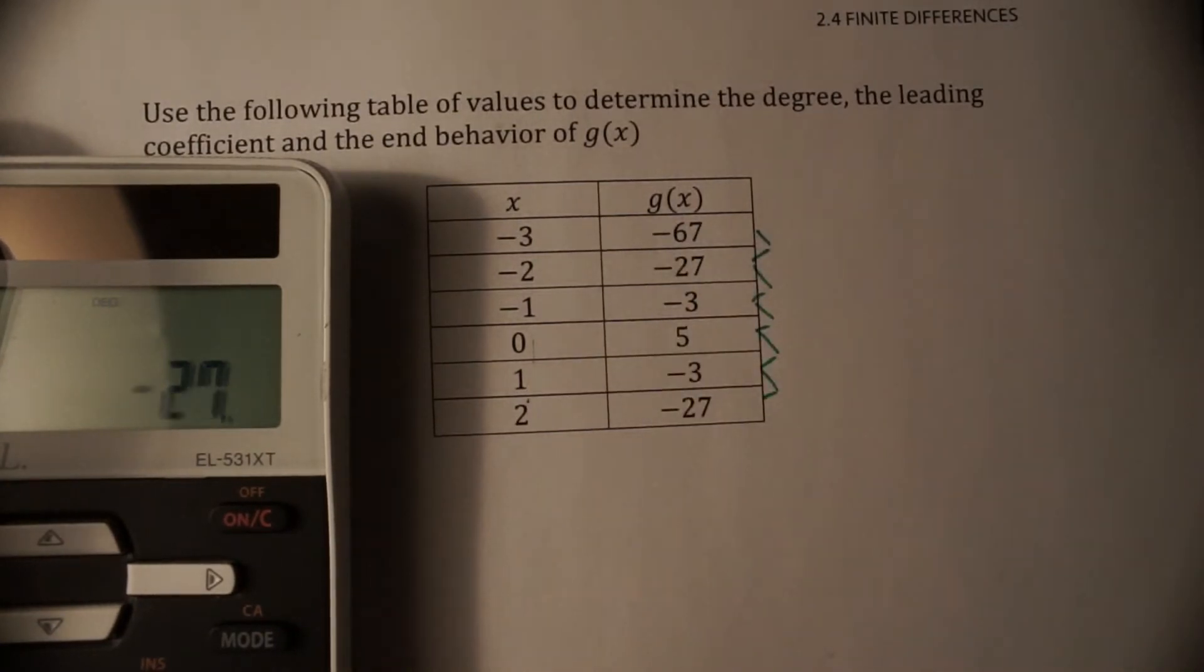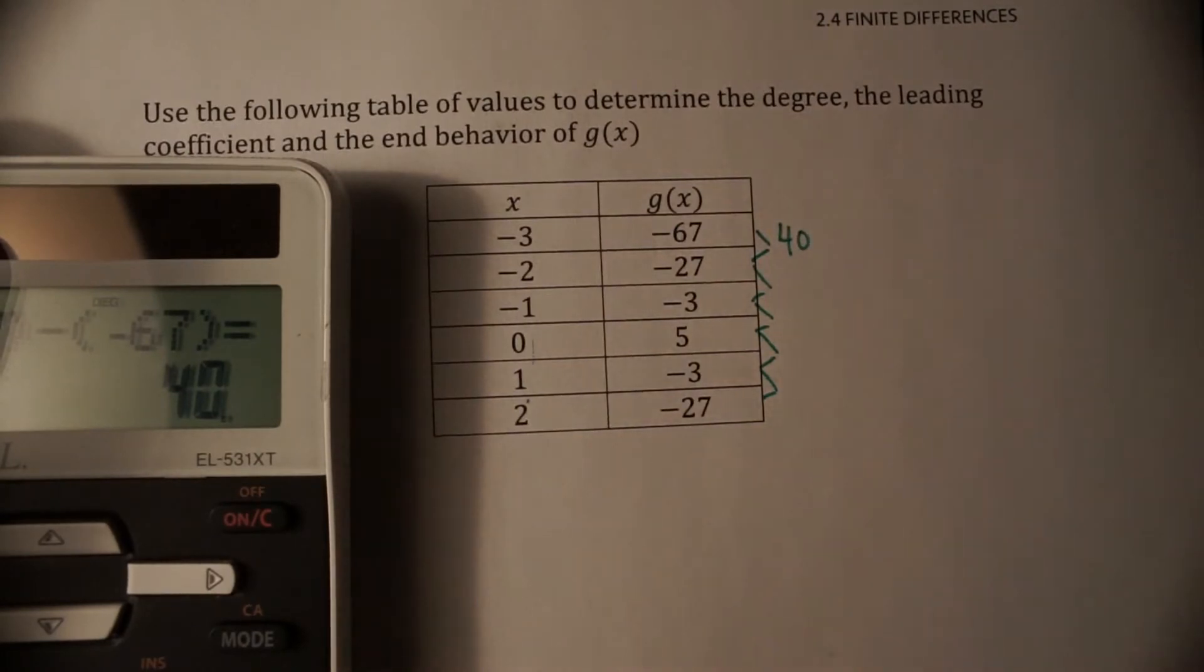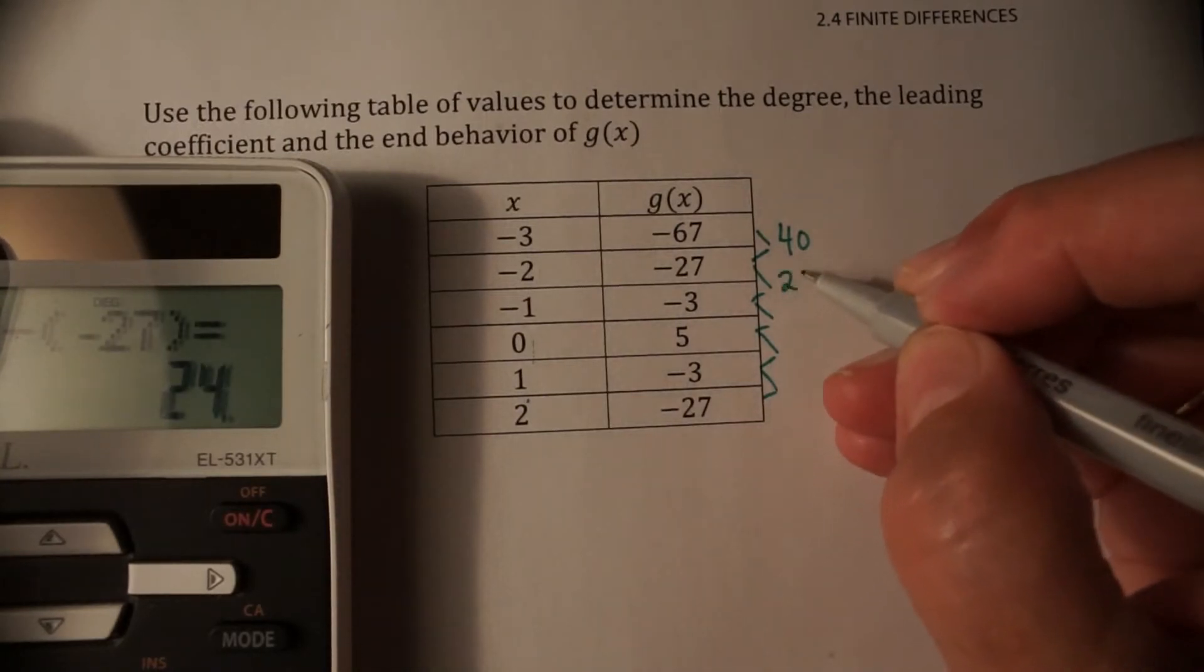Negative 27 subtract negative 67 gives me 40. And then negative 3 subtract negative 27 is 24, positive.